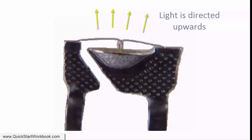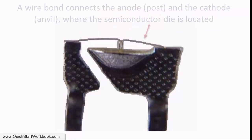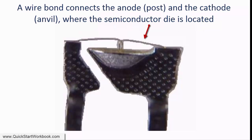The conical shape of the cup reflects the light emitted from the semiconductor die upwards. This is why LEDs appear to be brighter if you view them from the top rather than from the side. A wire bond connects the post and the anode.